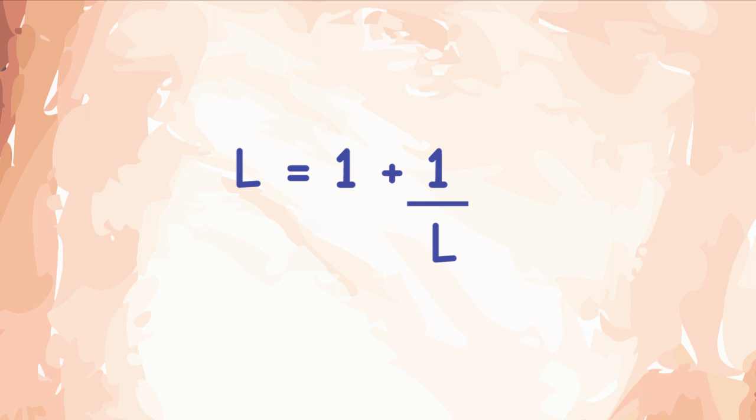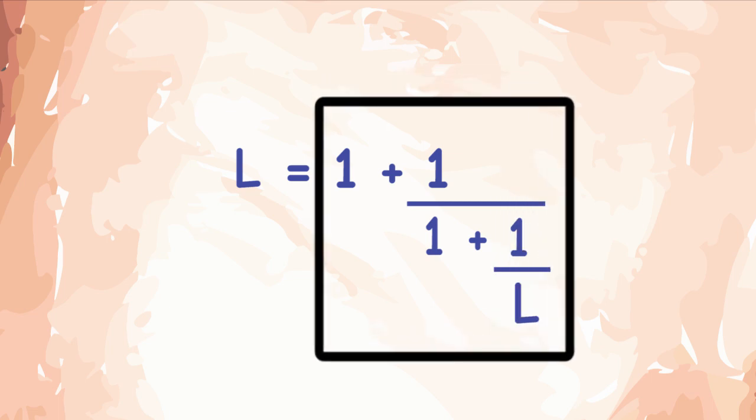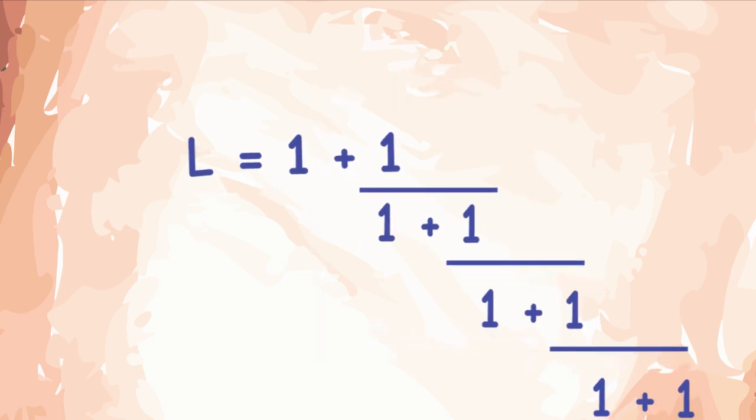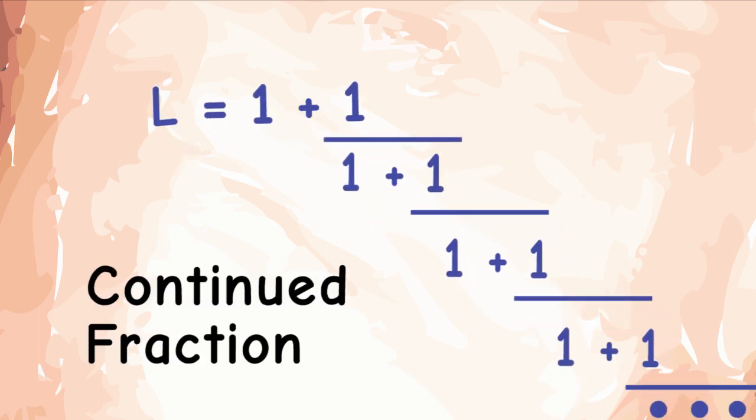If we reconsider this equation and instead of writing an L here, since L is already this entire block, we could have written L as 1 plus 1 over L. We can terminate this with an L, but L again is just this entire block. And in a similar fashion, we can go on forever. Such a type of a fraction is called a Continued Fraction.